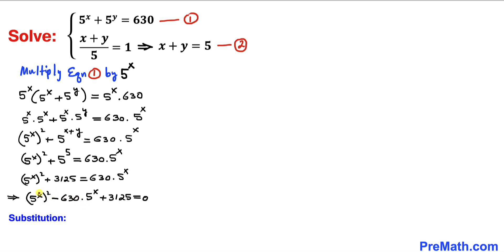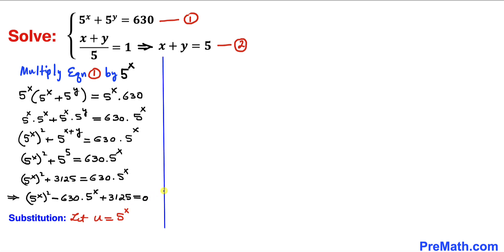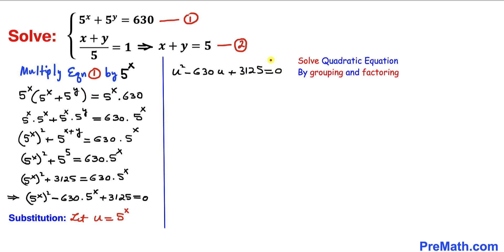To make our job easier, let's do a substitution. Let u equal 5^x. Then our equation simply becomes u^2 minus 630u plus 3125 equals zero. This is a quadratic equation.